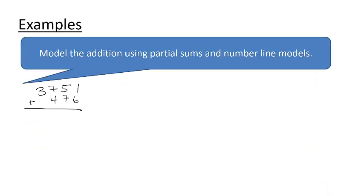To end the lesson, let's work on a few examples. The first one we're going to look at is 3,751 plus 476. We're going to model this addition using partial sums, as well as the number line. All right, so starting off our partial sums, I'm going to start at the units. 1 unit plus 6 units is 7 units. And then we have 50 plus 70 for 120. And then 700 plus 400 for 1,100. And finally, that 3,000 doesn't get added to any more thousands. So I'm going to bring that down to the bottom.